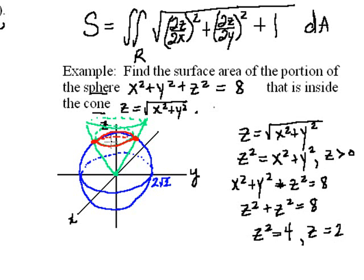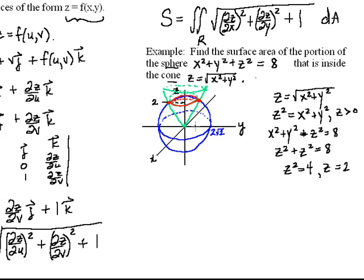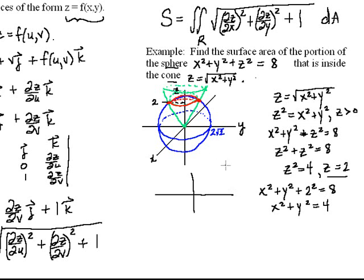That tells us the sphere and cone meet at a height of z = 2. Moreover, substituting z=2 into the sphere equation gives x²+y²+4=8, so x²+y²=4. That's the equation of the circle where they meet, and it also defines the boundary of the region R in the xy-plane that we're integrating over.